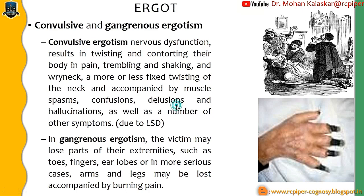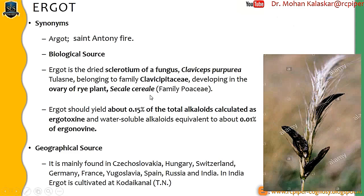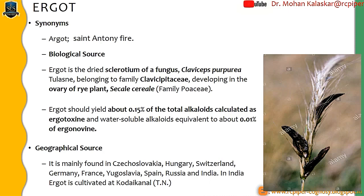Now we will see some of the pharmacognosy of Ergot. The drug is known as Ergot, and it is also known as St. Antony's Fire, because St. Anthony was a Catholic saint who used to prepare some balms with aromatic plants and give them to patients suffering from Convulsive Ergotism and Gangrenic Ergotism, which produces a burning pain. This burning pain was relieved by such a balm, known as St. Antony's Fire balm, and because of that, the name St. Antony's Fire was given to Ergot.